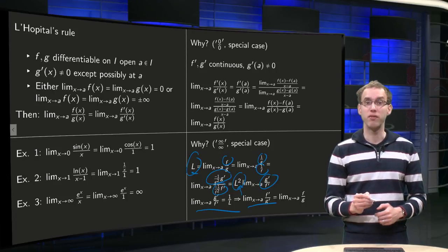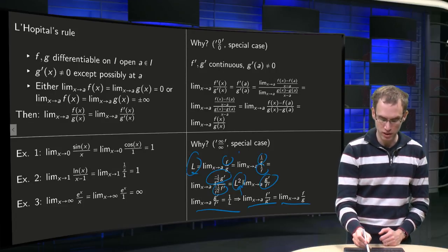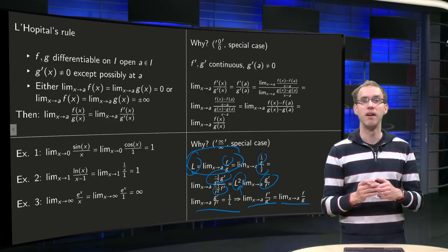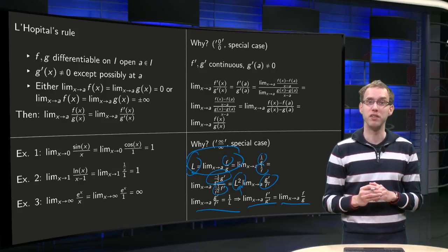And we get limit x to a of f' over g' equals limit x to a of f over g equals our L over here. So that's kind of an idea why this works in the infinity over infinity case.